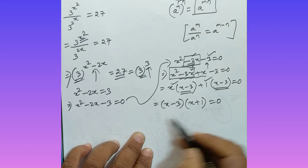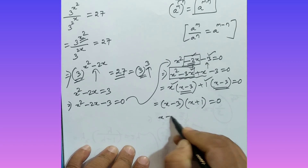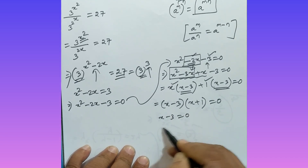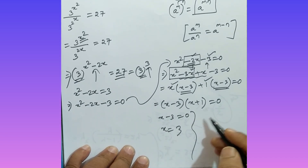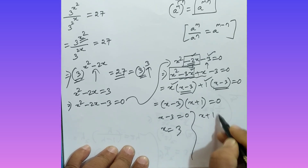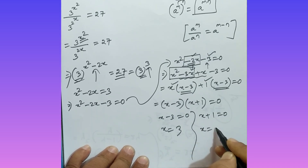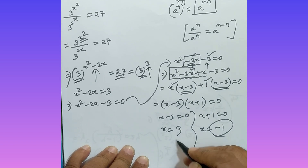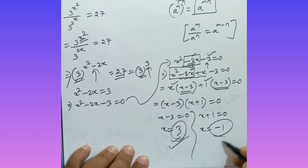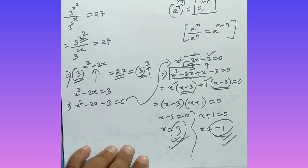Setting each factor to zero: x minus 3 equals zero gives x equals positive 3, and x plus 1 equals zero gives x equals minus 1. So x equals 3 and x equals minus 1 — these are your values of x. If you liked this video, please like and subscribe to my YouTube channel. Thank you, students.